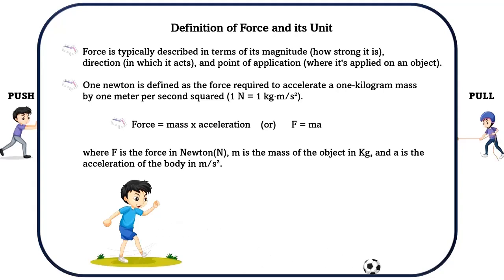The fundamental unit of force in the International System of Units is the Newton (N), named after Sir Isaac Newton who made significant contributions to our understanding of force and motion. One Newton is defined as the force required to accelerate a 1 kilogram mass by 1 meter per second squared. Force equals mass times acceleration, or F = MA, where F is the force in Newtons (N), M is the mass of the object in kg, and A is the acceleration of the body in meters per second squared.